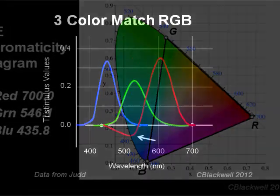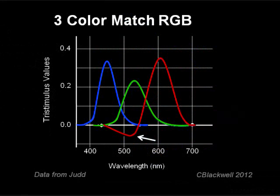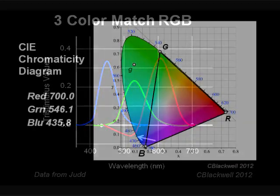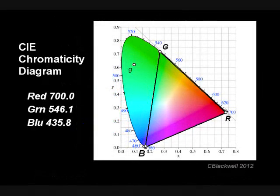Remember in our color matching diagram there was a part of the spectrum that required the addition of red to the test color to make a match? Looking at the chromaticity diagram, can you see how that now makes sense? For example, take a color, say G in the diagram, in the blue-green region outside the RGB triangle. Adding red to it would bring it to the RGB triangle where it can then be matched by blue plus green.